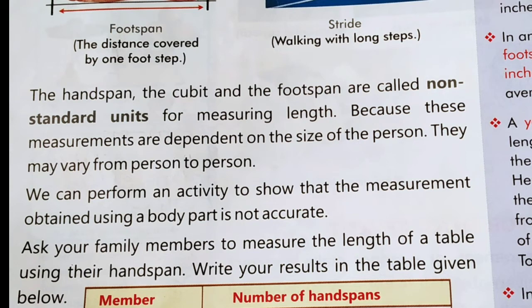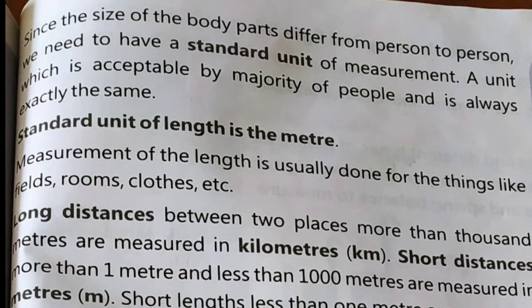Because these measurements are dependent on the size of the person — क्योंकि ये measurements अलग-अलग person के size के उपर depend करते हैं. They may vary from person to person — ये एक person से दूसरे person में different हो सकता है. We can perform an activity to show that the measurement obtained using a body part is not accurate. Ask your family members to measure the length of a table using their hand span, अपने hand span की मदद से एक table को नापें और उसका result लिखिए — देखिए उनमें सभी का अलग-अलग measurement आया होगा. Since the size of the body parts differ from person to person, we need to have a standard unit of measurement.